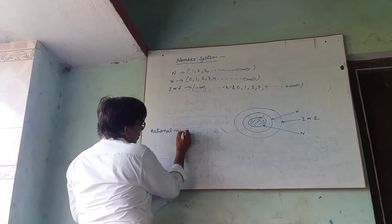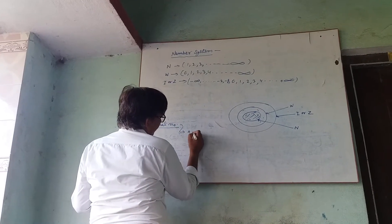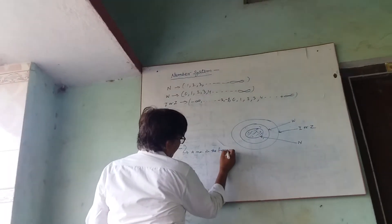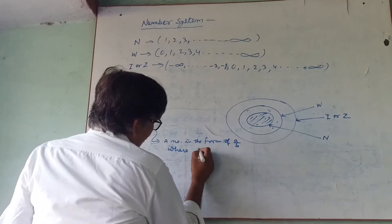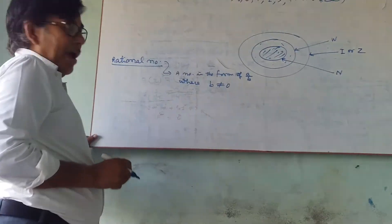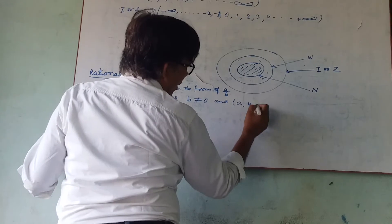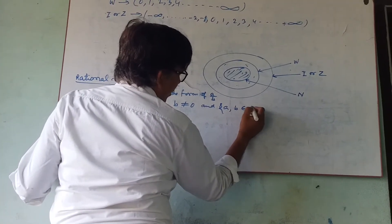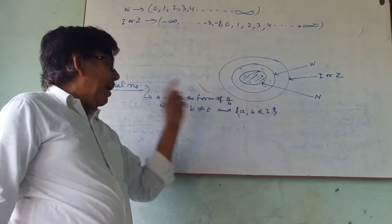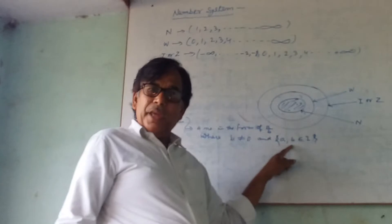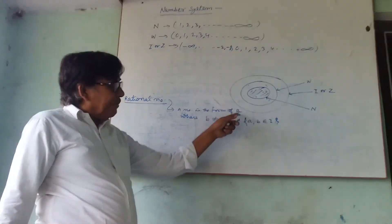Natural numbers are a subset of whole numbers, and whole numbers are a subset of integers. Rational Numbers: a number in the form of A/B, where B is not equal to zero and A, B belong to integers (I). If a number is in the form of A/B where B is not equal to 0 and A, B are any integers, then it is a Rational Number.